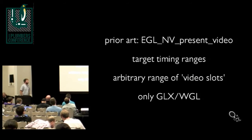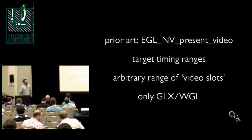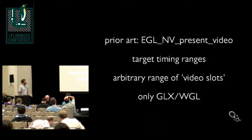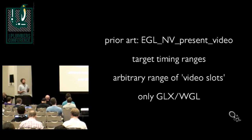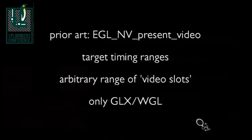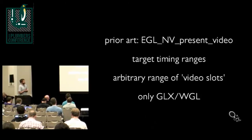The most useful prior art for queuing is NVIDIA's GL_NV_present_video extension — it's a GL extension for GLX on X11 and WGL on Windows. There's an arbitrary number of video slots, and it allows you to schedule future display on a particular slot with target timing ranges — you say you want a frame displayed no earlier than time X and no later than time Y. The range is quite nice because it lets you deal with misses under user space's explicit instructions: whether you want to take the stutter or drop the missed frames and carry on.